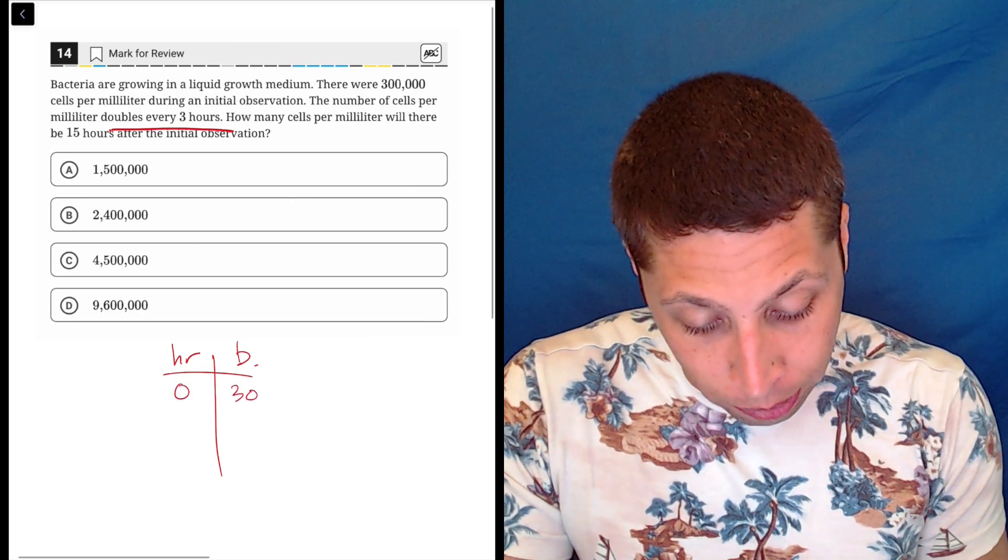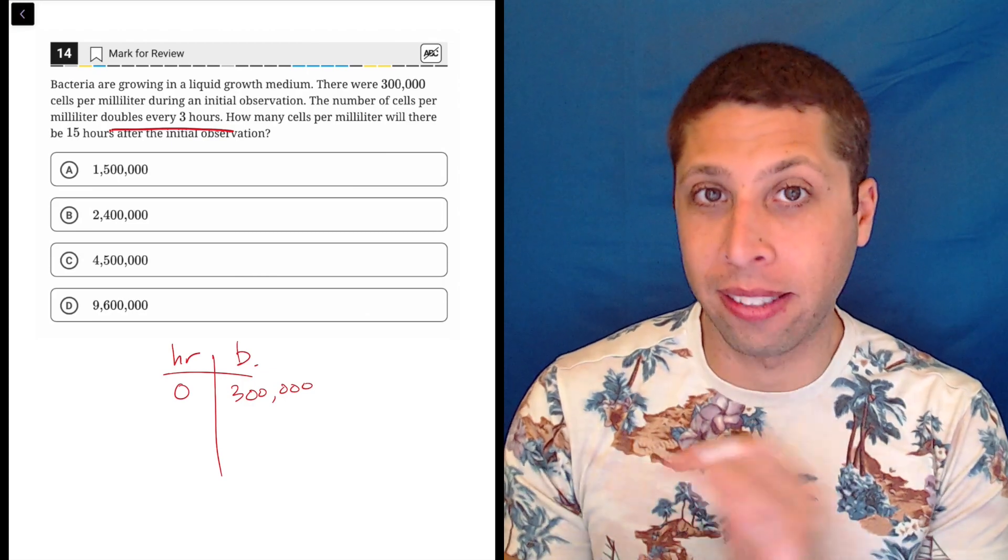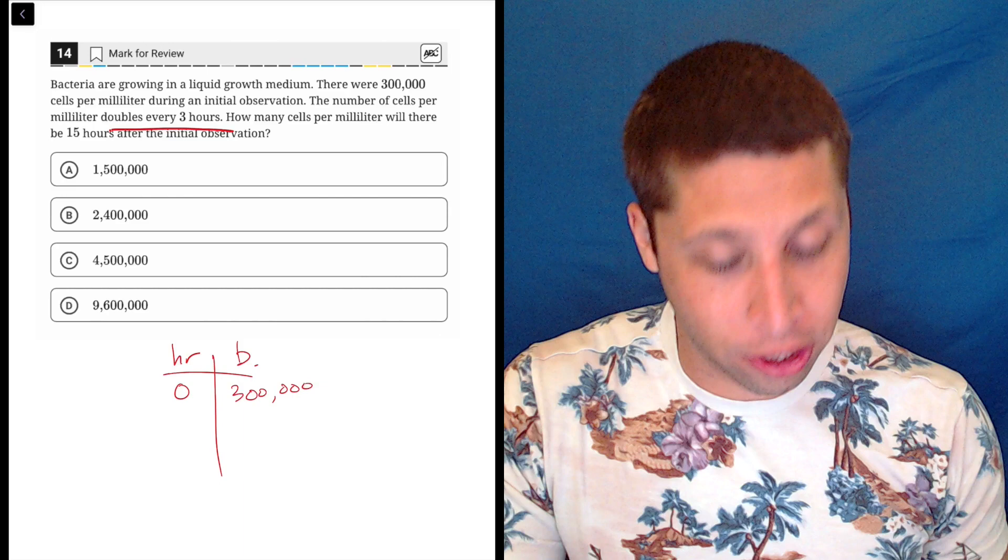After zero hours, we have 300,000. This is the y-intercept, the starting point. We need to be able to pull those things out of an equation or out of a story, I should say.